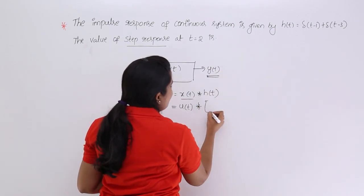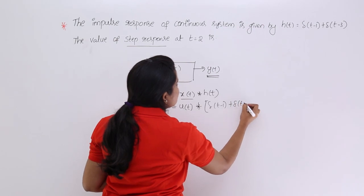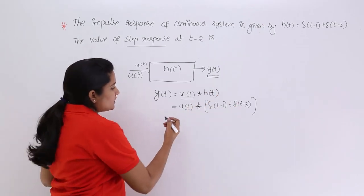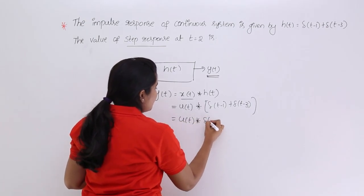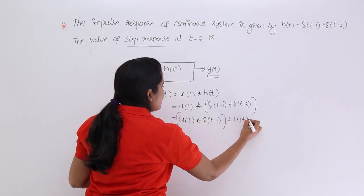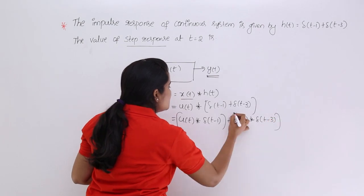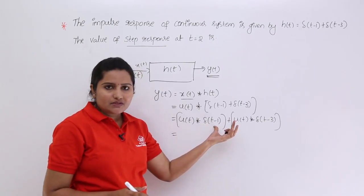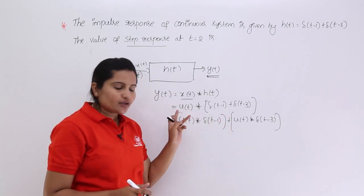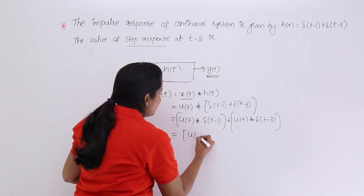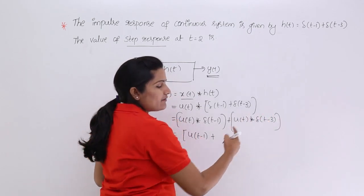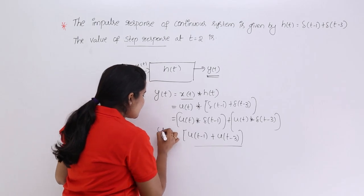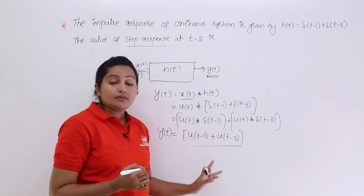Convolving with h(t) = δ(t−1) + δ(t−3), we use the distributive property of convolution — you can convolve individually and then add. That means: u(t) * δ(t−1) + u(t) * δ(t−3). Using the shifting property, convolving with a shifted impulse δ(t−1) shifts the signal, giving u(t−1). Similarly, convolving with δ(t−3) gives u(t−3). So the step response is y(t) = u(t−1) + u(t−3).